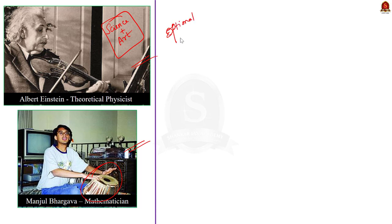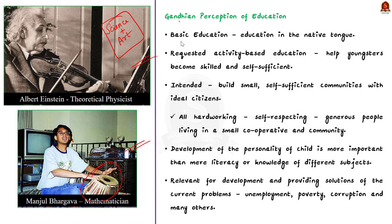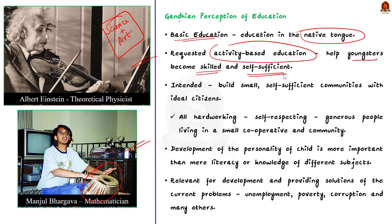Just link this with the Gandhian educational policy. The education system proposed by Mahatma Gandhi is called basic education. He was primarily concerned with education in the native tongue and has requested activity-based education to help youngsters become skilled and self-sufficient. Gandhiji intended to build small self-sufficient communities with ideal citizens who were hardworking, self-respecting and generous people living in a small cooperative community. He wished that some local craft should be made as a medium of education for children so that they develop their mind, body and soul in a harmonious way and also meet the needs of their future life.